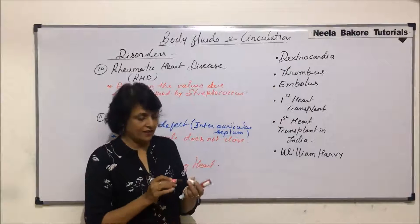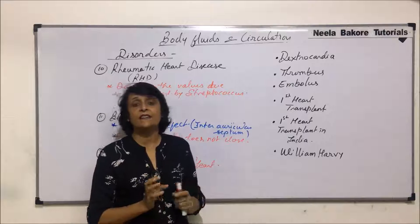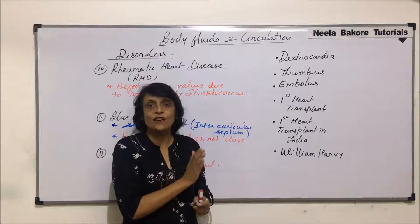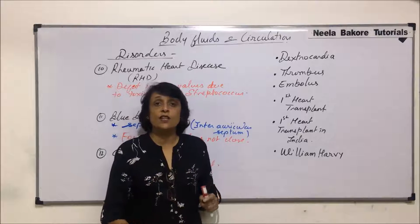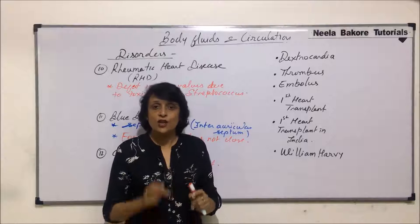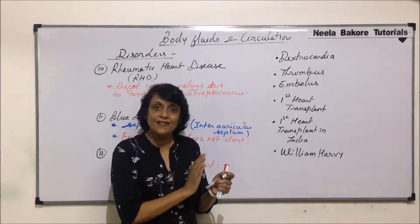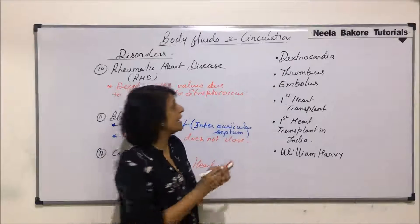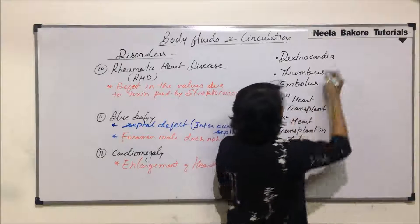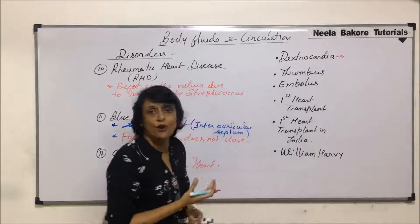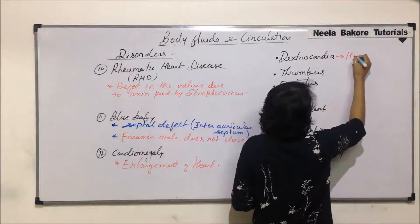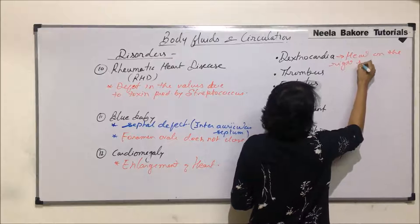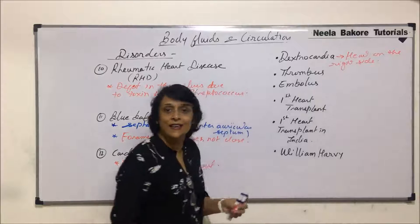Dextrocardia is a very unique condition. Our heart is located in the thoracic cavity slightly on the left side, and there is a depression in the left lung called the cardiac notch, so the heart fits into that depression on the left side. In dextrocardia, the heart is on the right side. We may not call it a disorder — it is just a condition where the heart is on the right side instead of the regular left side.